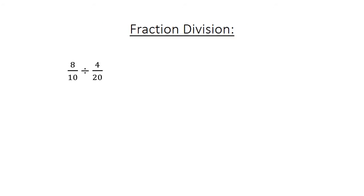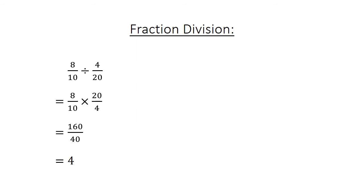Fraction division: 8 over 10 divided by 4 over 20. Multiply by the reciprocal: 8 over 10 times 20 over 4 equals 160 over 40, which simplifies to 4.